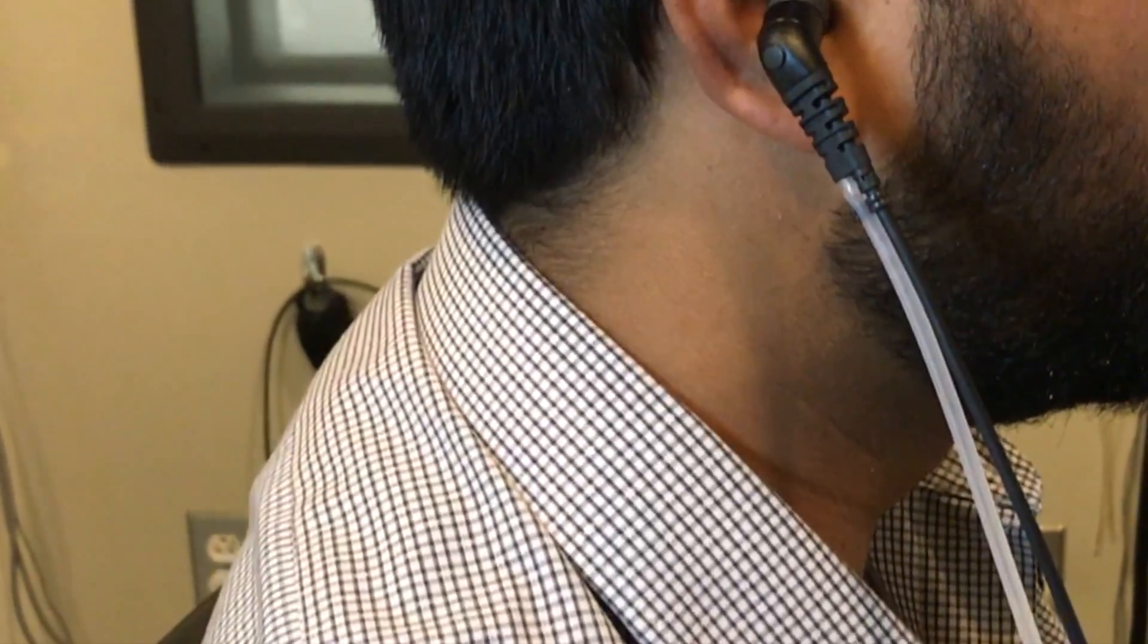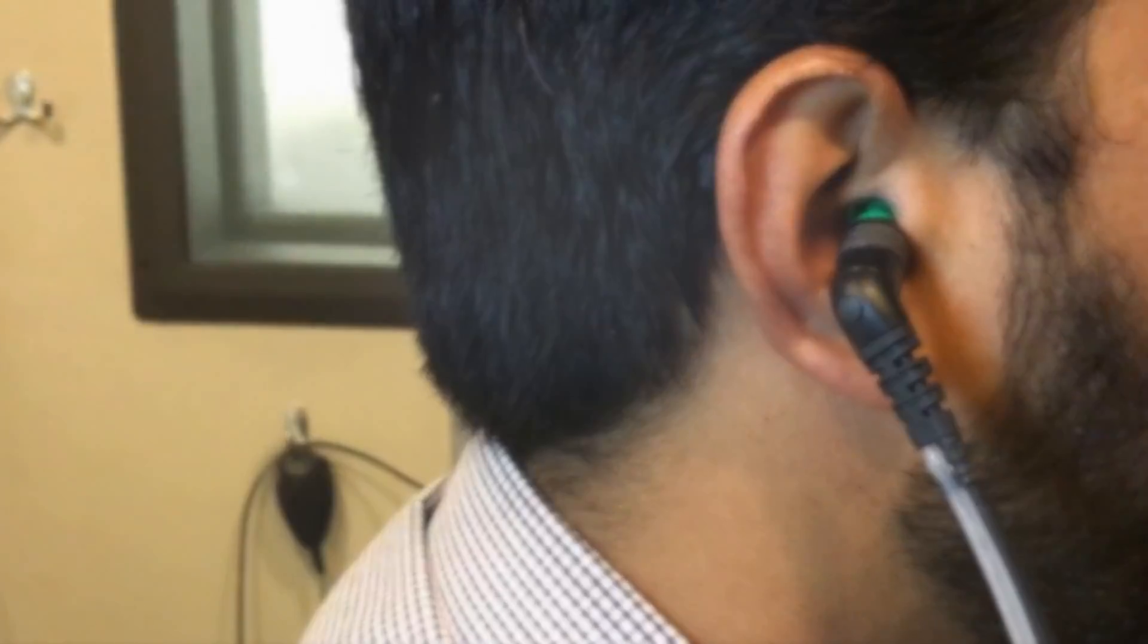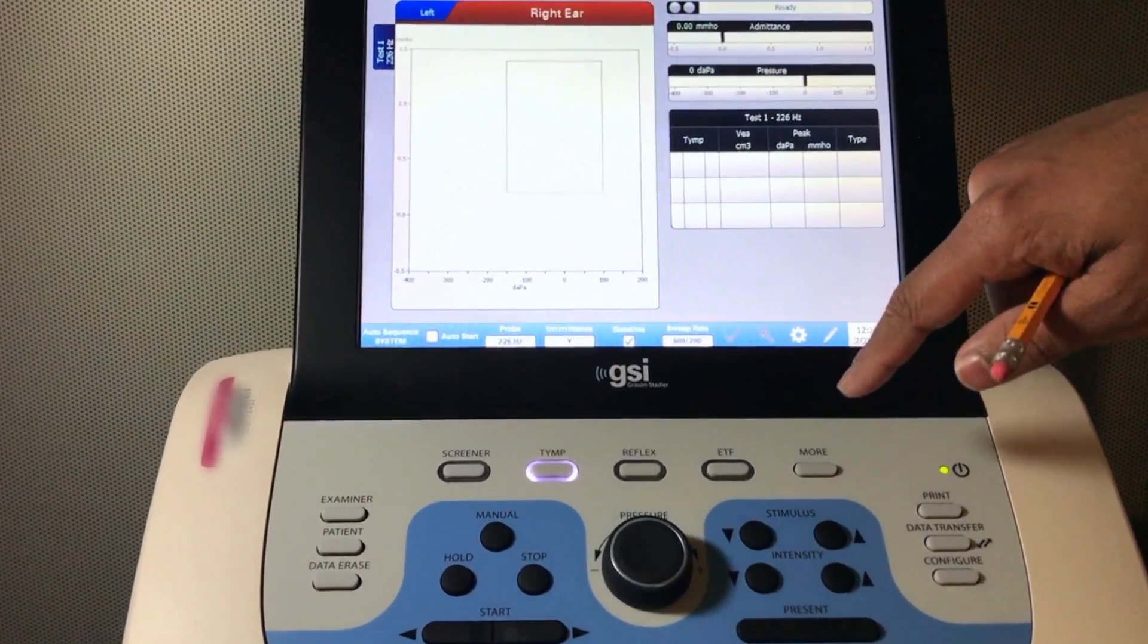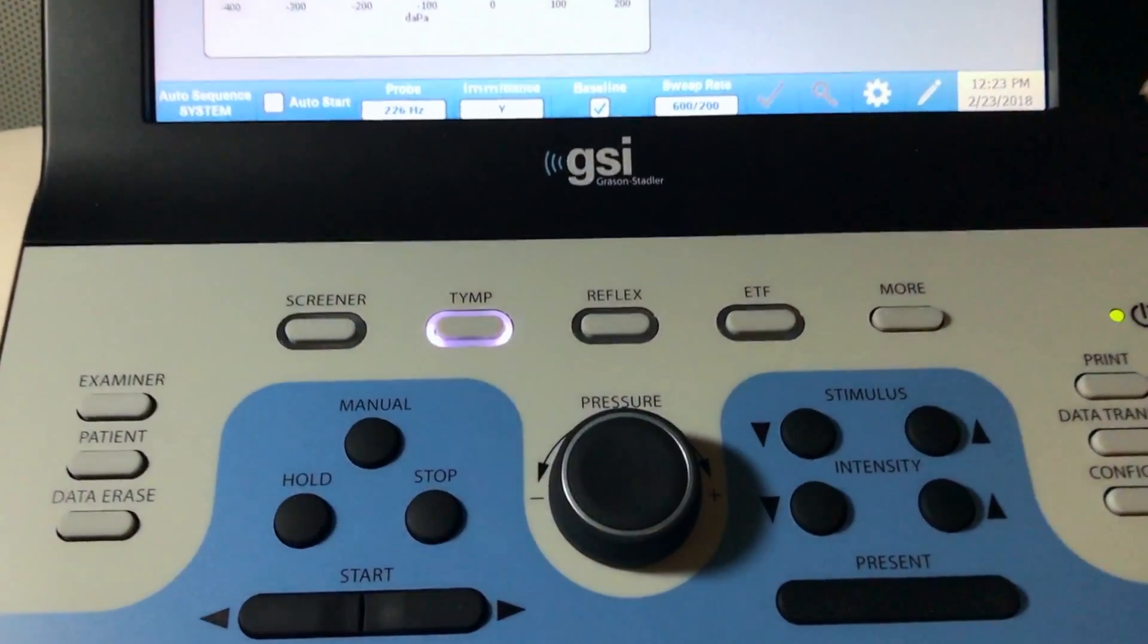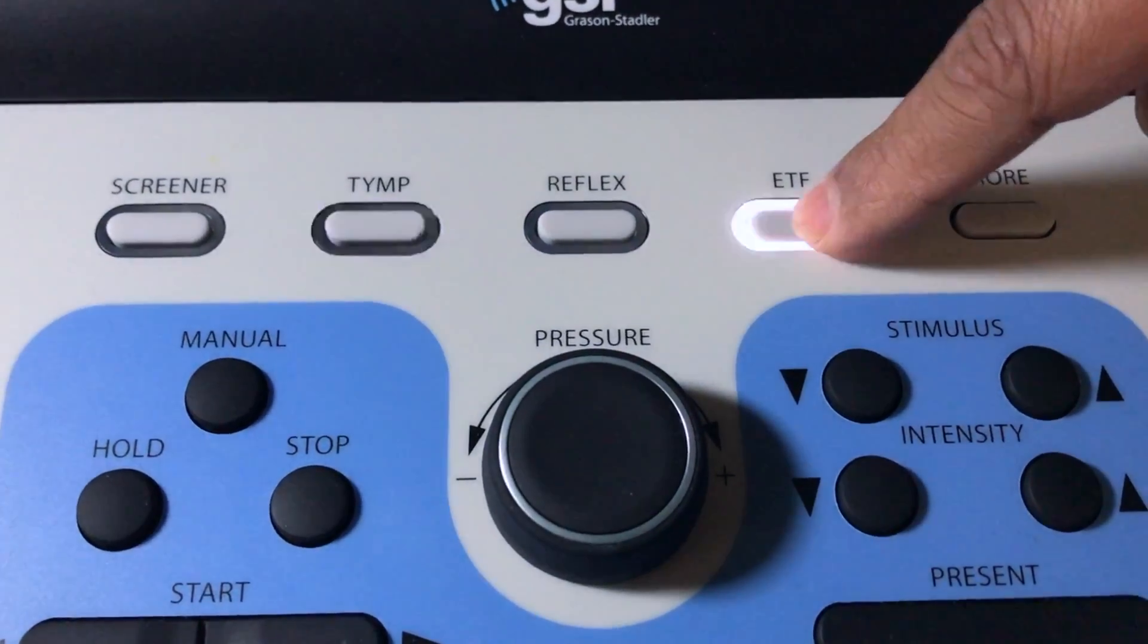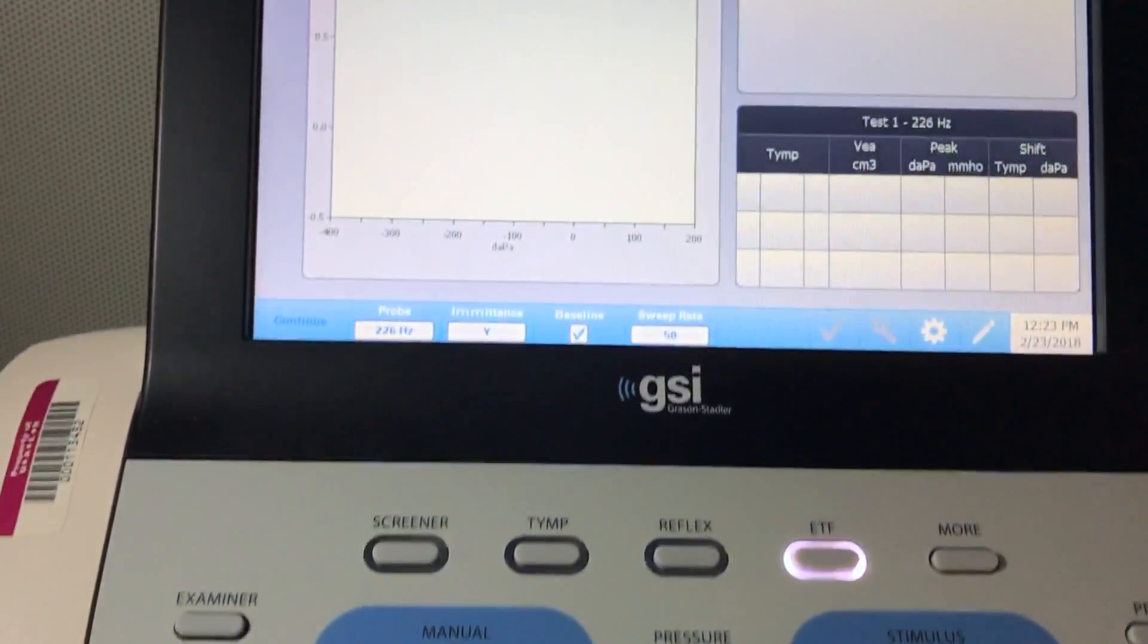Today we're going to learn how to perform the eustachian tube function test. In order to perform this test, we have a special function in our tympanometer which is called the ETF function. So select the ETF test.